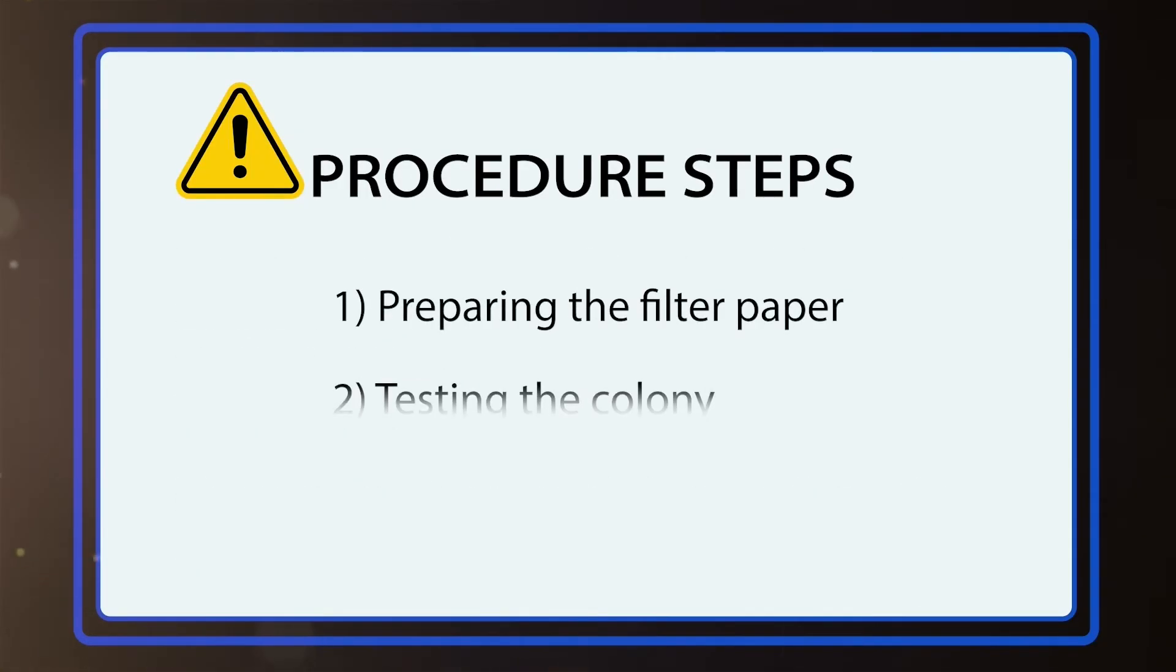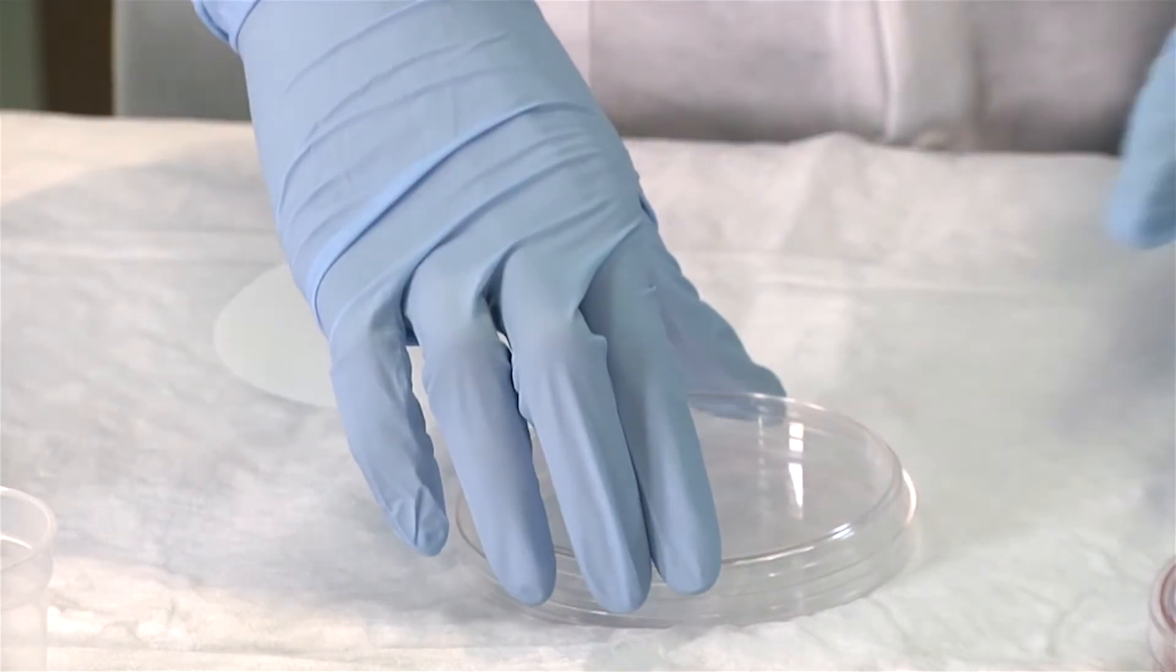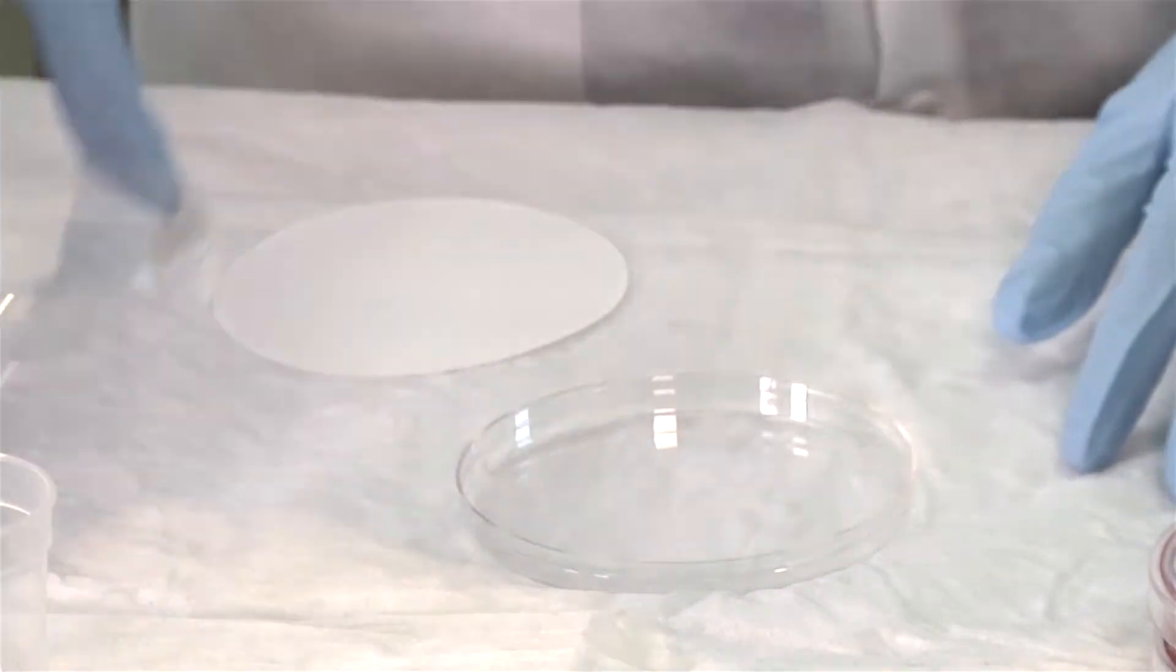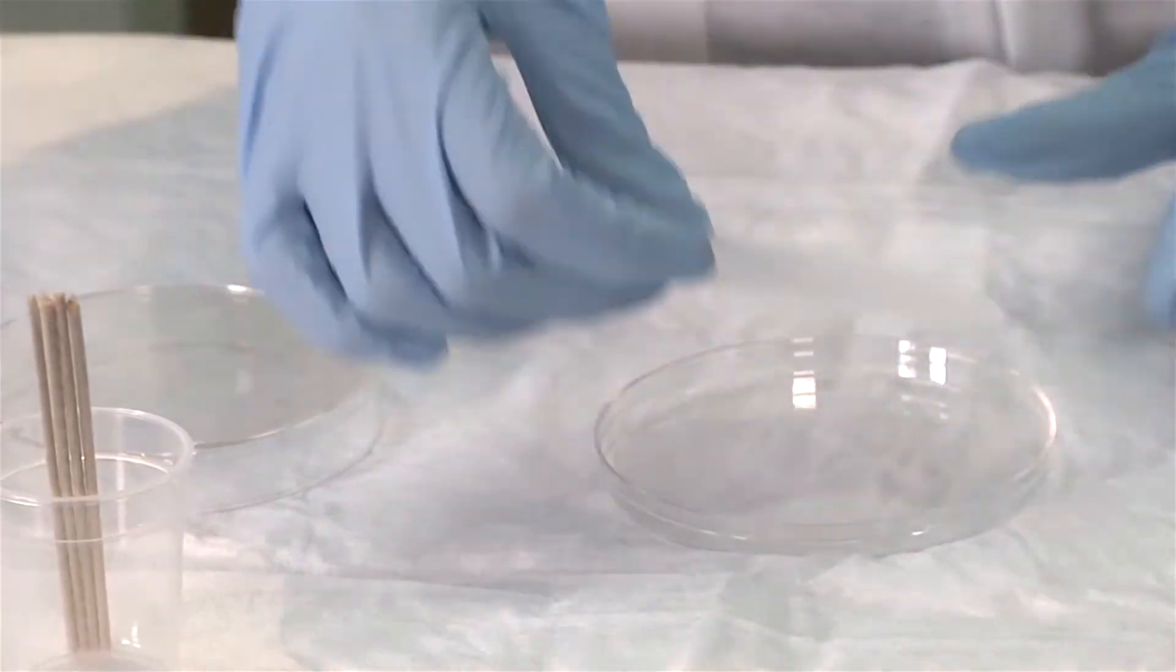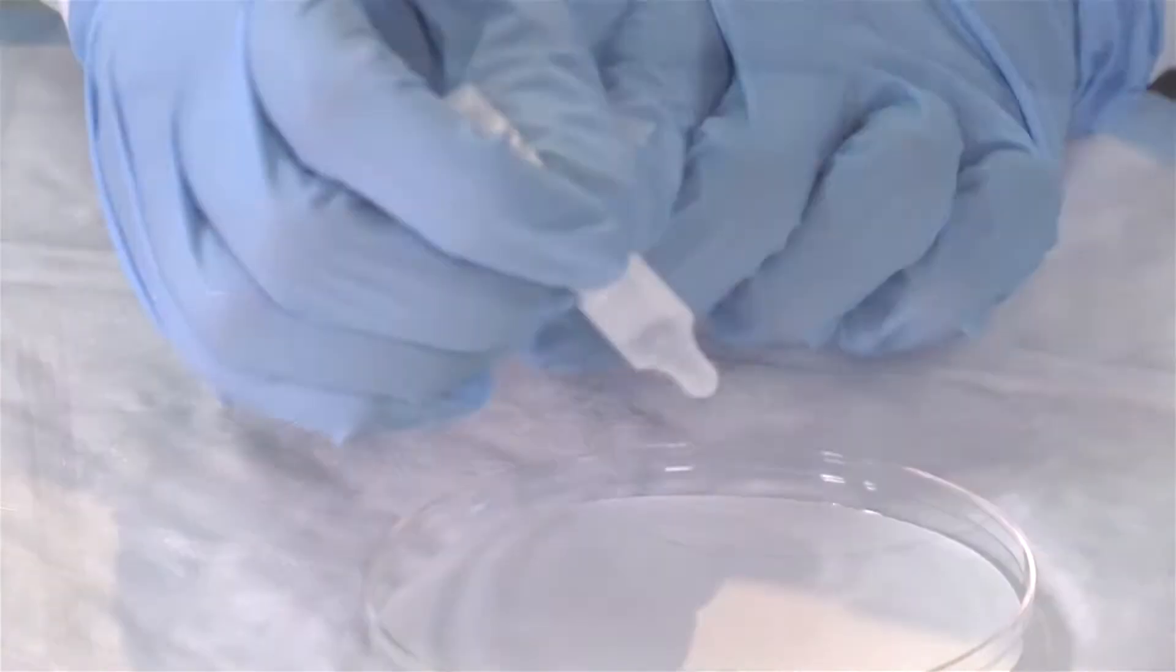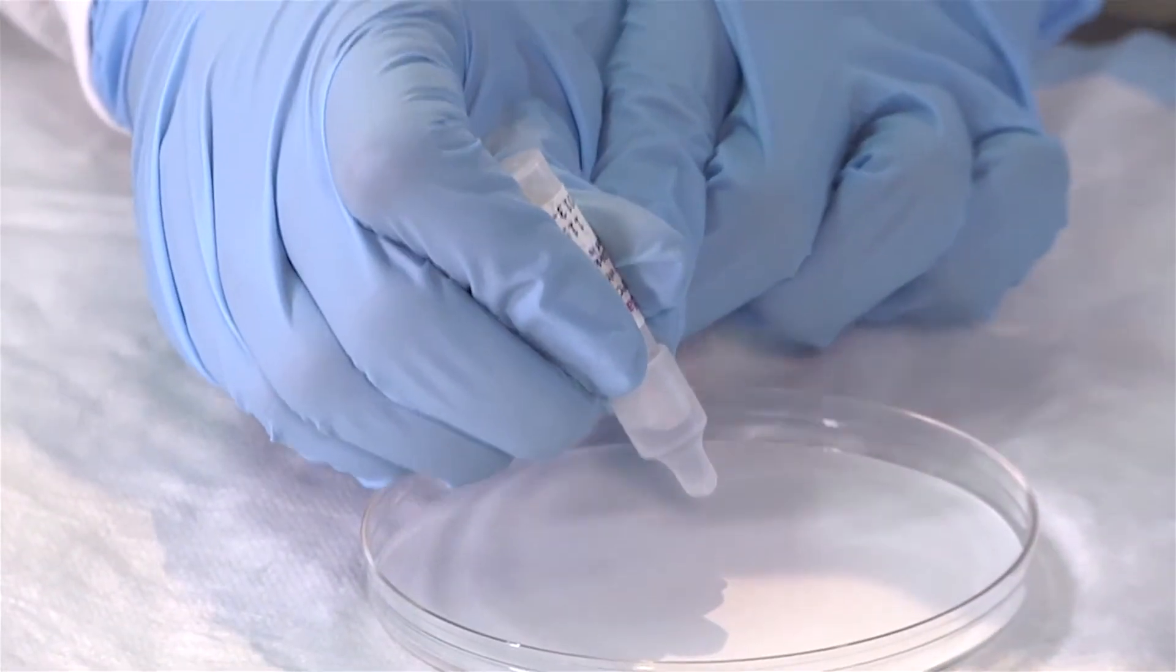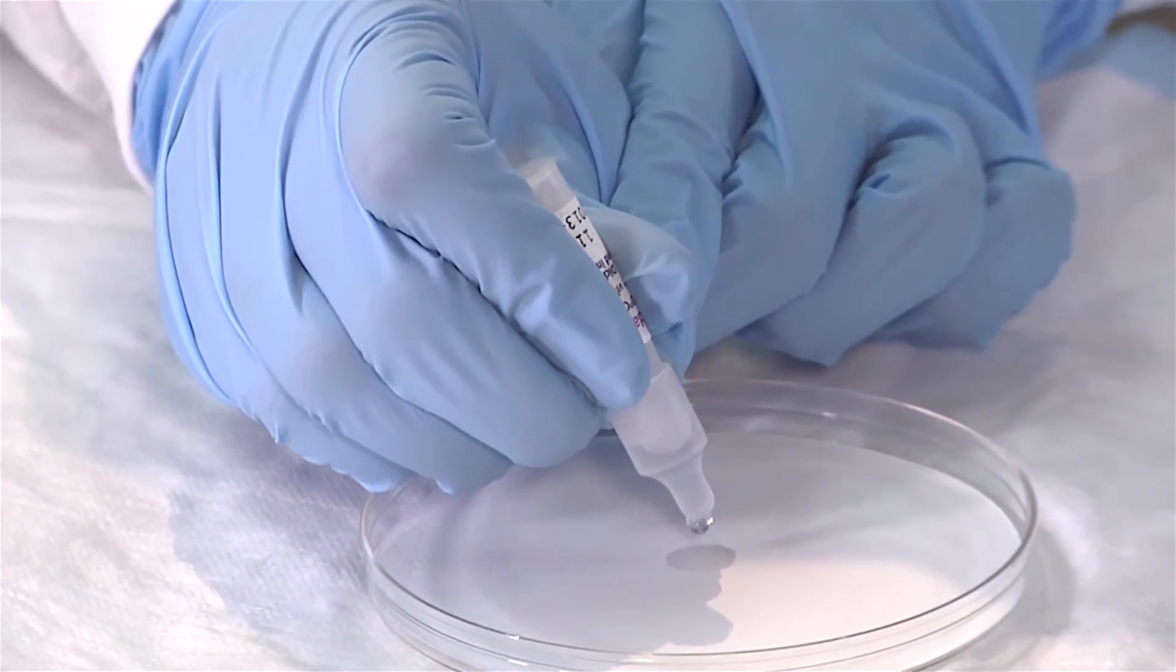Preparing the filter paper, testing the colony, and interpreting the results. First, place a piece of filter paper in a petri dish. Next, moisten the filter paper with one to two drops of the oxidase reagent. Always check that the reagent has not expired.